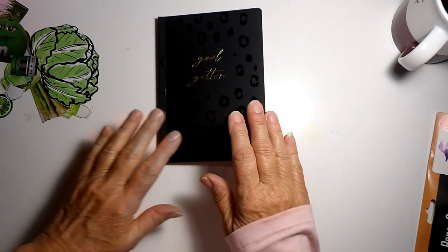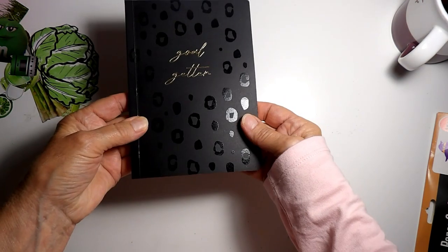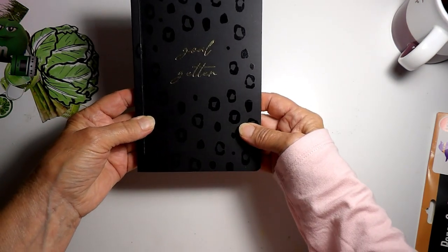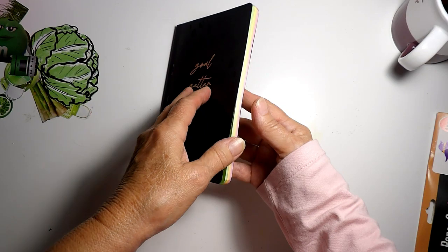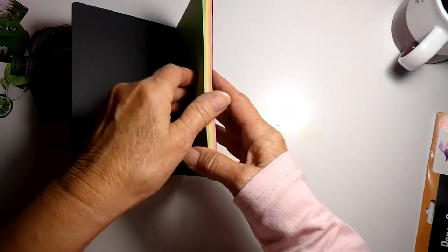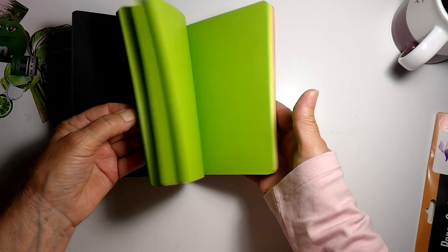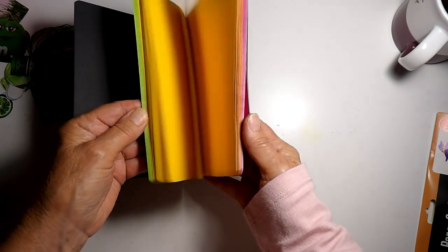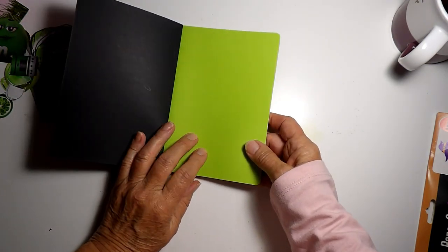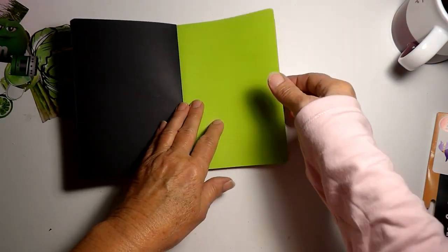I have found this little journal at Dollar Tree, and I got it because I saw all the brightly colored papers, and thought I could make a color glue book with this one, a mini color glue book.